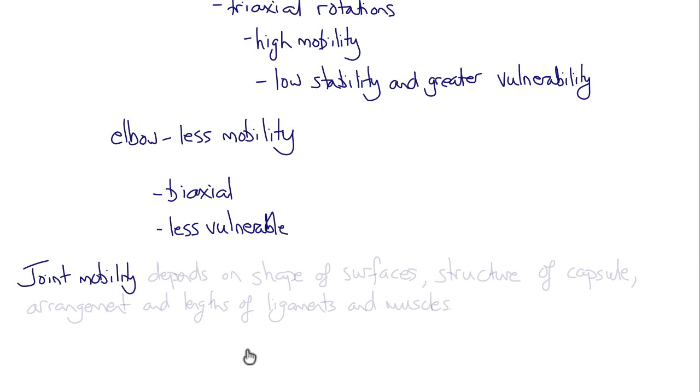Joint mobility depends on the nature and shape of the articulating surfaces, the structure of the capsular ligament, and the lengths and arrangements of the ligaments and muscles surrounding the joint.